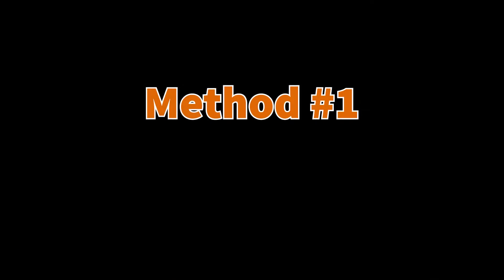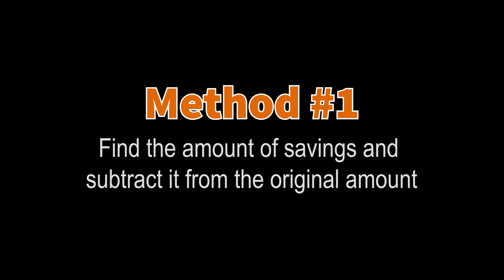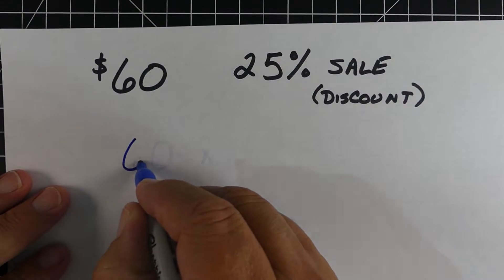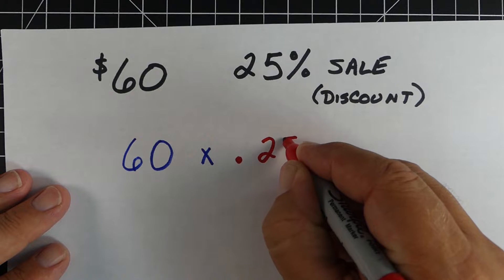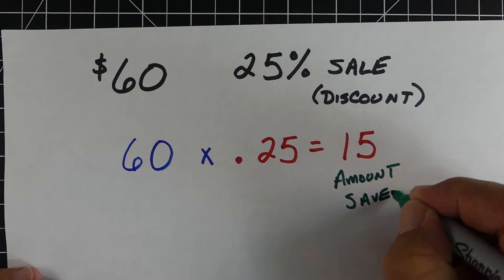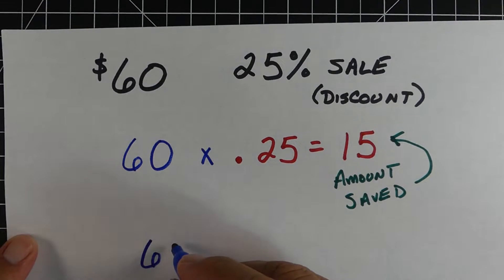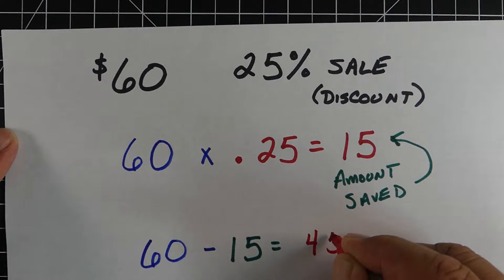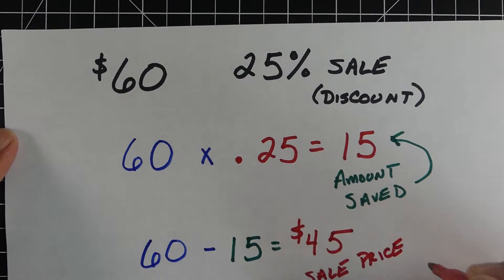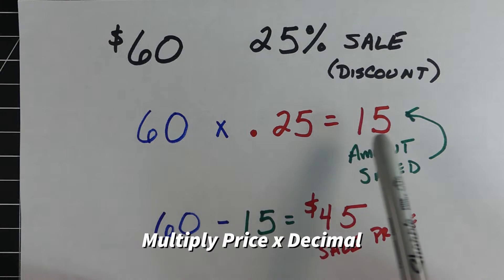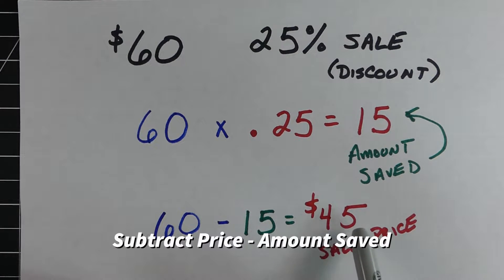In Method 1, we're going to find how much we're going to save and subtract it from the original cost. In this problem we take 60 times 0.25, which is 25% written as a decimal, and that gives us 15, or $15 — that's the amount we're going to save. We subtract that 15 from the original cost of 60, which gives us $45 as our sale price. So: convert the percent to a decimal, multiply by the whole amount to get the amount saved, then subtract from original cost.